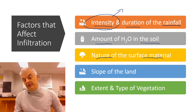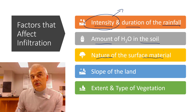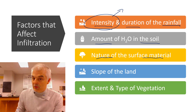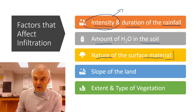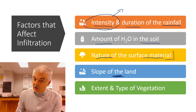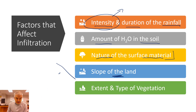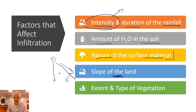The nature of the surface material is important. Is it a hard surface that doesn't allow water to infiltrate, or is it a soil that tends to allow water to infiltrate? The slope of the land also matters because as water hits the slope, it's going to run off and may not have a chance to absorb into the ground because it's moving so fast down the hill. And then the type of vegetation makes a difference because certain plants are going to absorb more water.